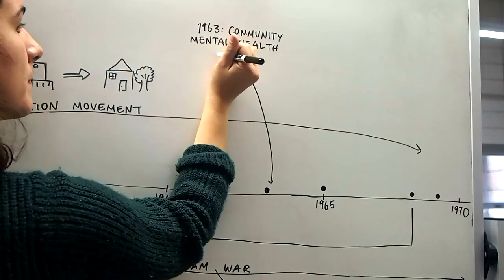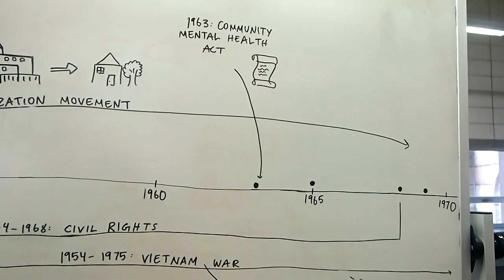In 1963, President Kennedy signed the Community Mental Health Act, which provided federal funding for community mental health centers contributing further to deinstitutionalization.